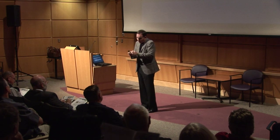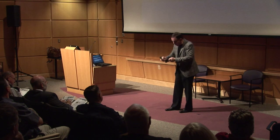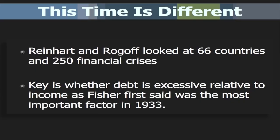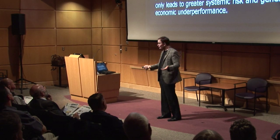I've written about this. If you guys haven't read this book, you should get it — 'This Time is Different' by Reinhart and Rogoff. You can read the first chapter and the last five chapters and get the gist. They looked at 66 countries and 250 financial crises. The real key is where debt is excessive relative to income, as Fisher said back in '33. Government actions, even involving sizable amounts of money, give the appearance of doing something, but empirical analysis shows they don't really do that much.